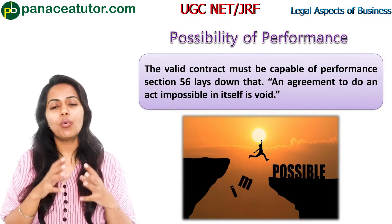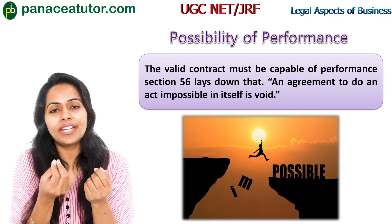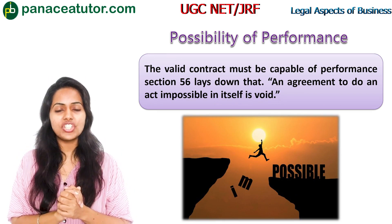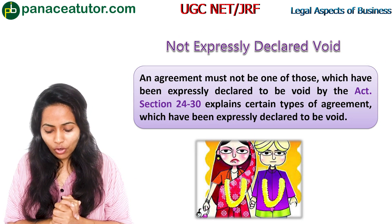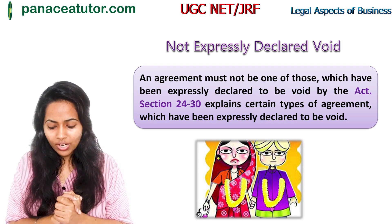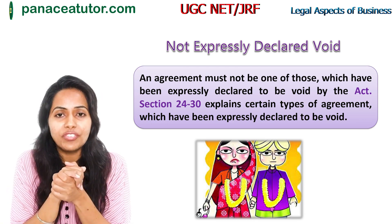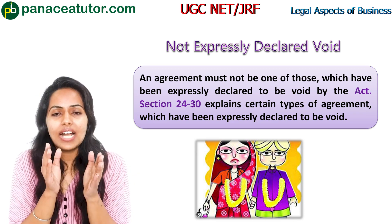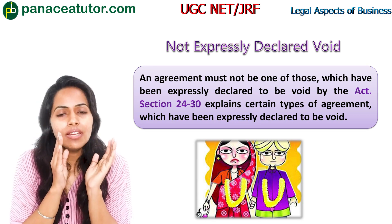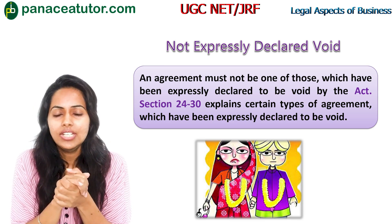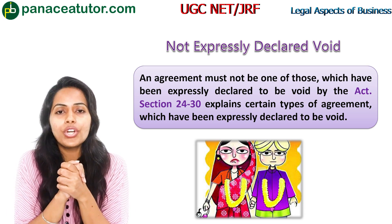The next essential element is possibility of performance — the contract must be possible to perform. If performance is impossible, it cannot be a valid contract. The following element is not expressly declared void. An agreement must not be one of those expressly declared void under Sections 24 to 30, which cover certain types of agreements such as restraint of trade and restraint of marriage. For example, if A promises to send B home only if B marries A's sister, that is a void contract — it cannot be a valid contract.